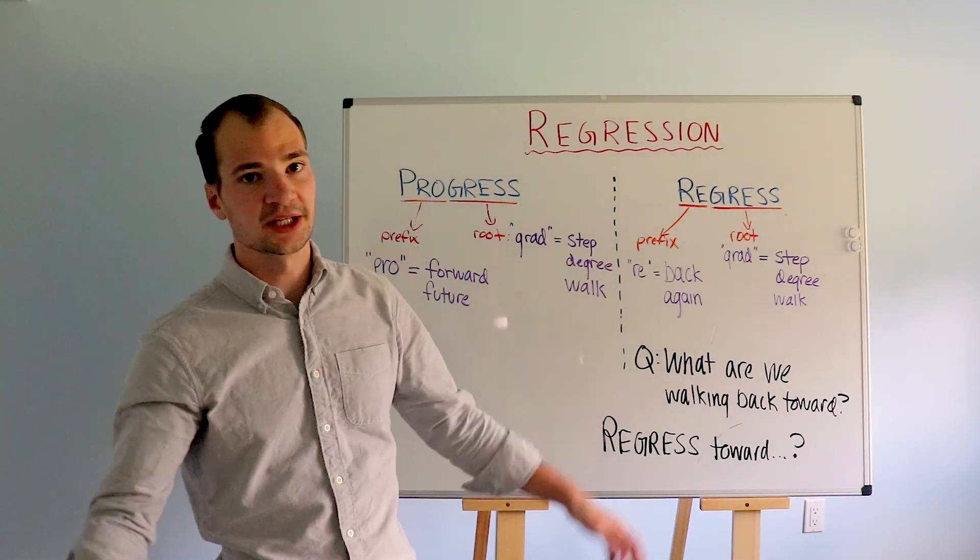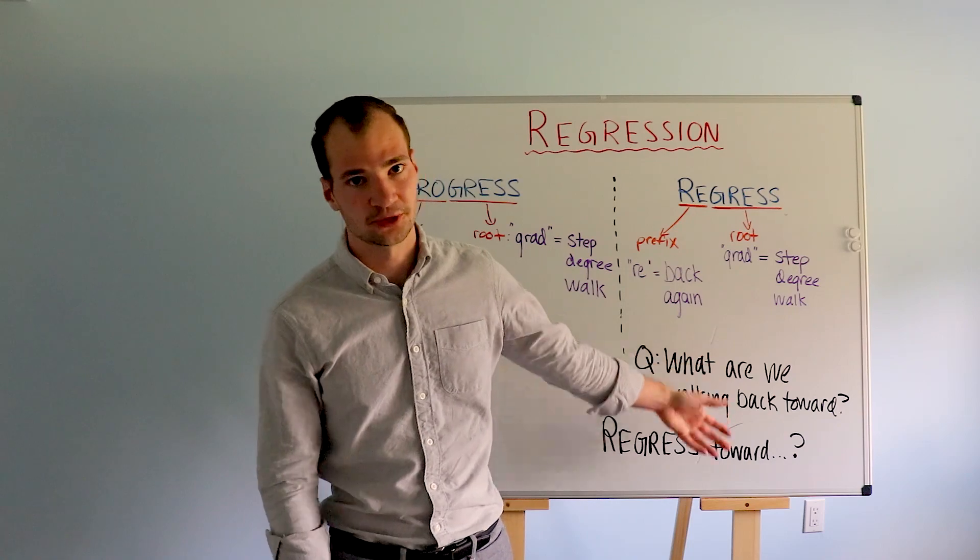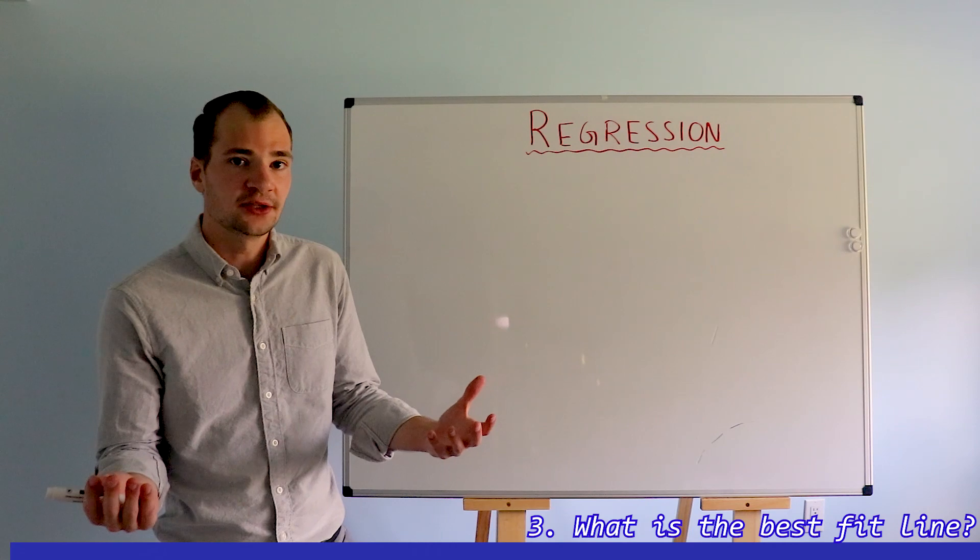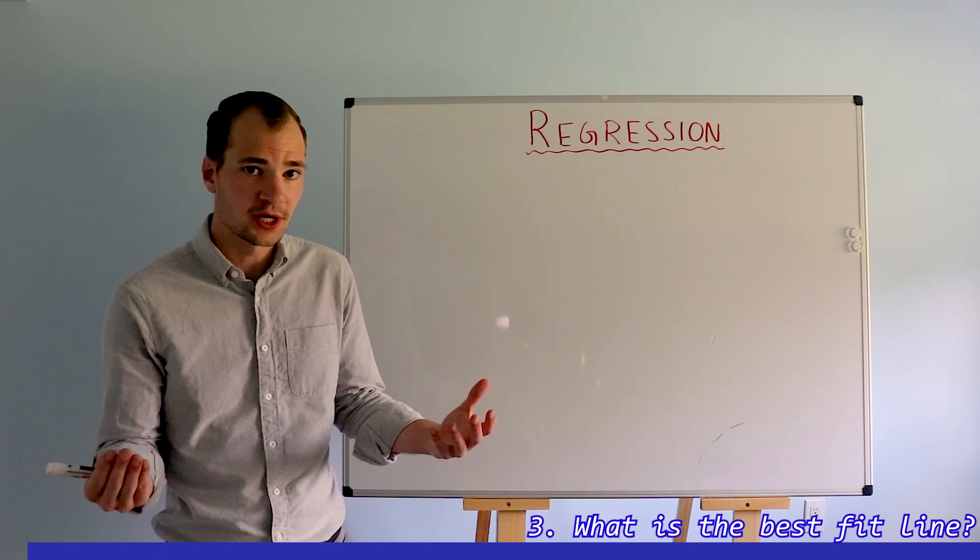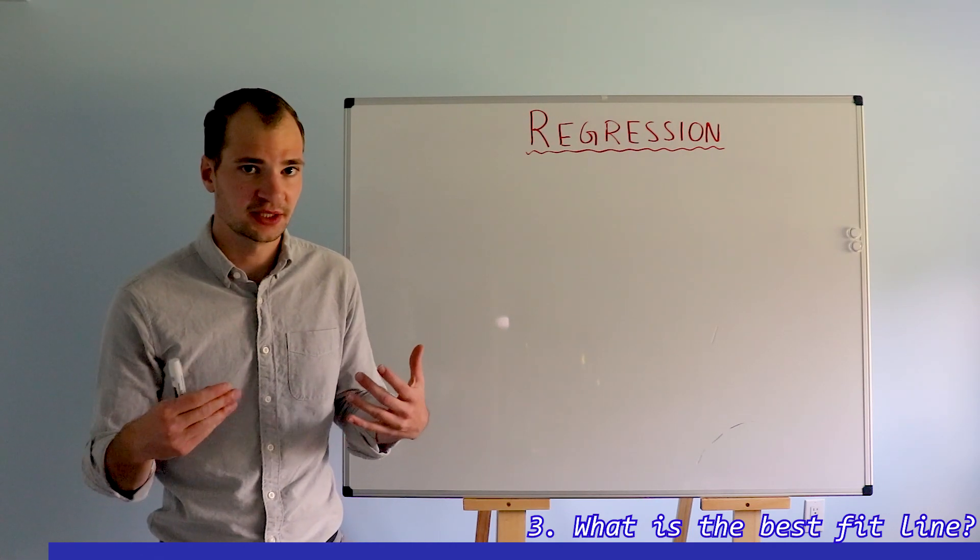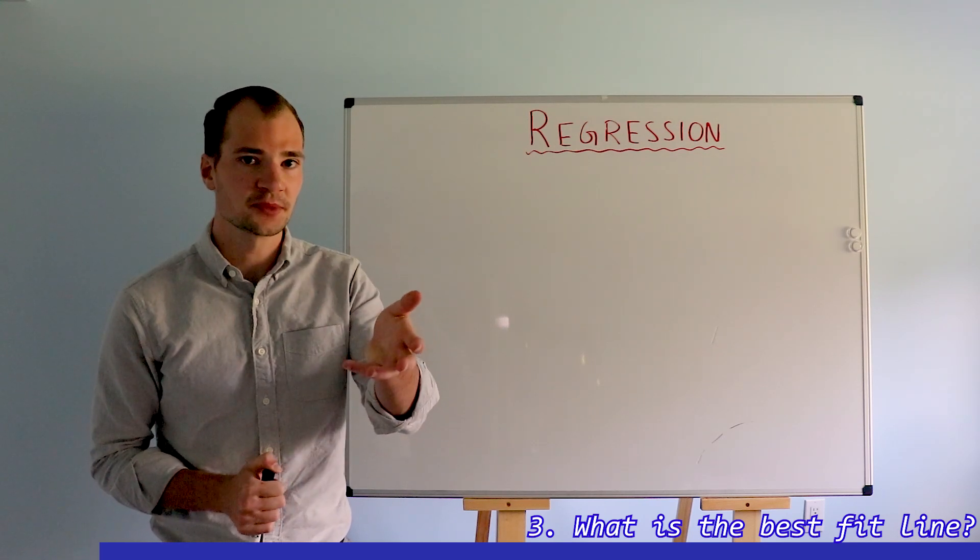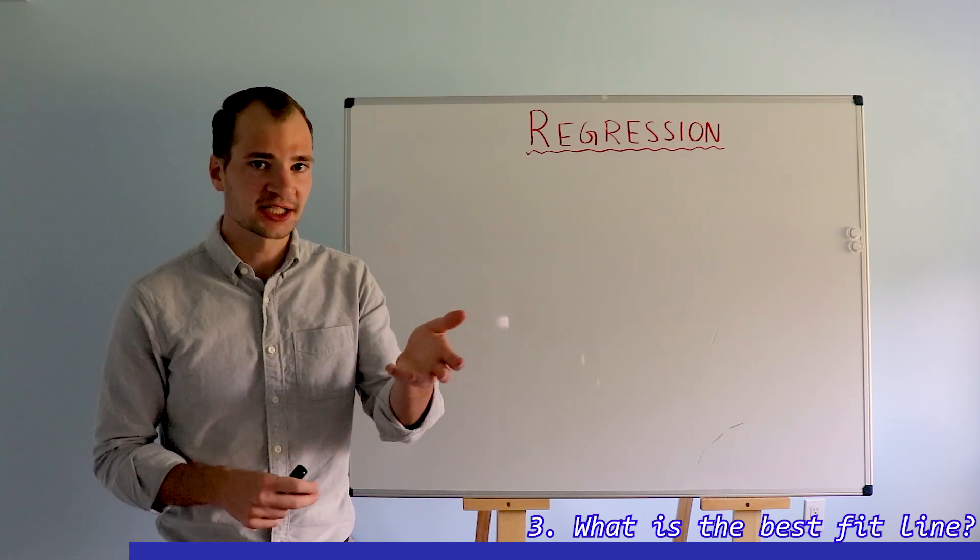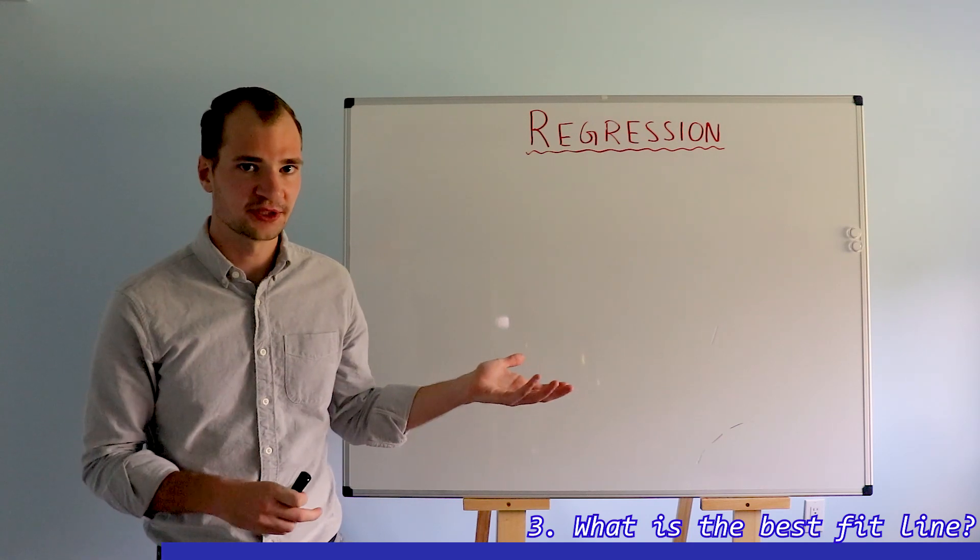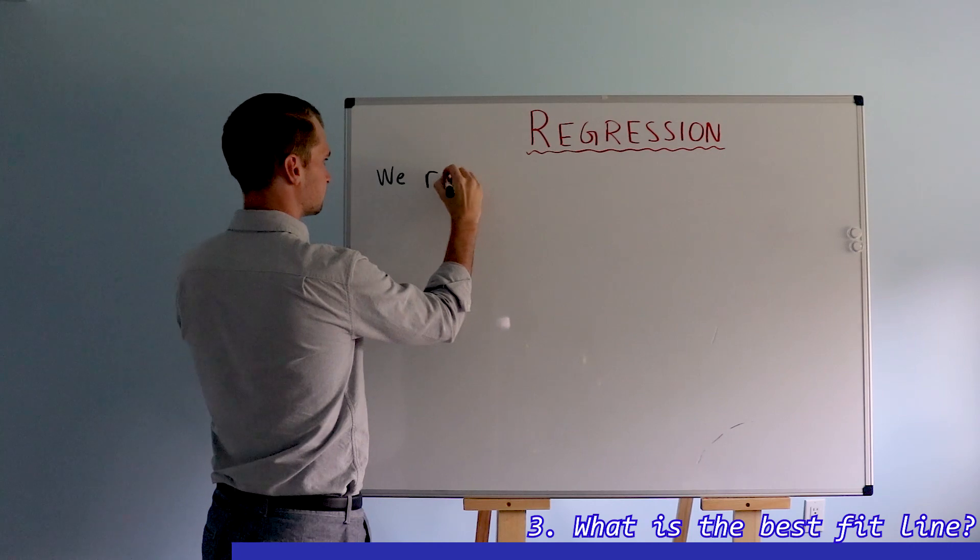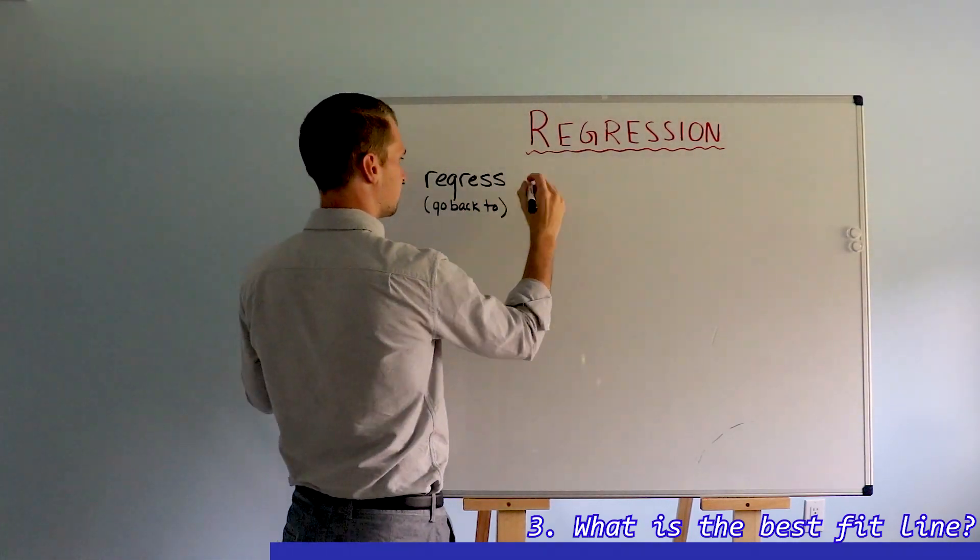But what are we taking a step back toward? Since we're learning English, we're dealing with a direct object here. What are we regressing toward? In the absence of any new information, we regress back toward the best fit line. In other words, unless we have probable cause to deviate from the best fit line, our expectation for a future observation should be the output that corresponds to the input as a function of the best fit line.